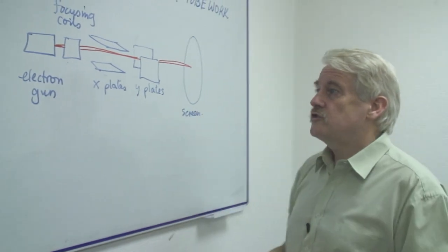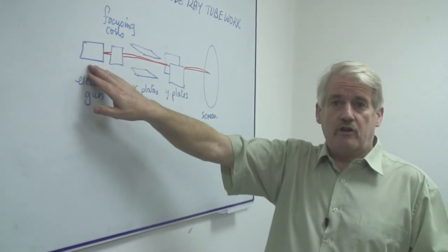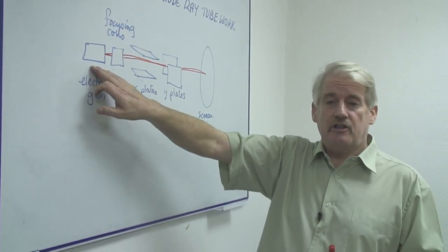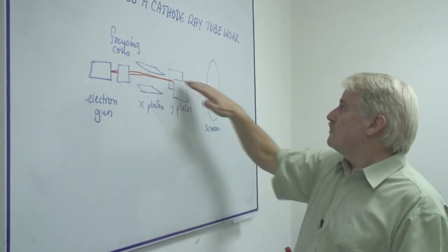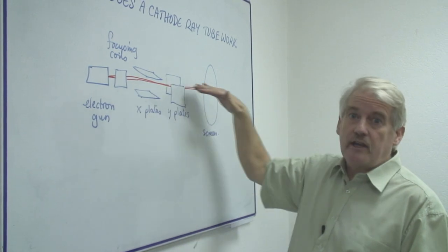But all cathode ray tubes consist of an electron gun producing negatively charged electrons which then are directed in a beam through the tube which is evacuated.